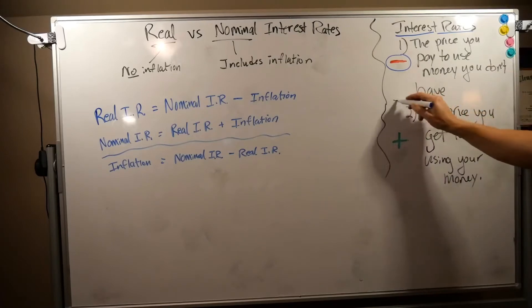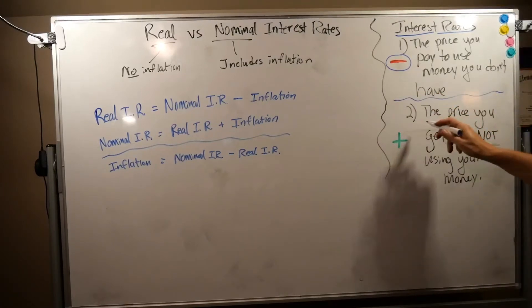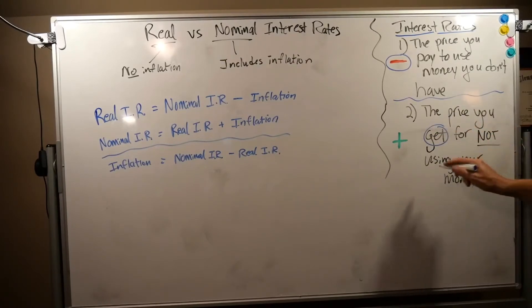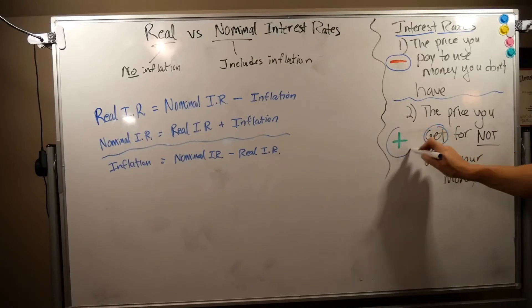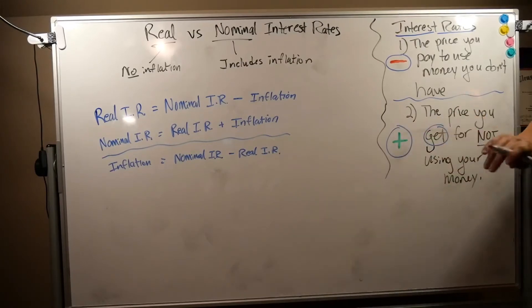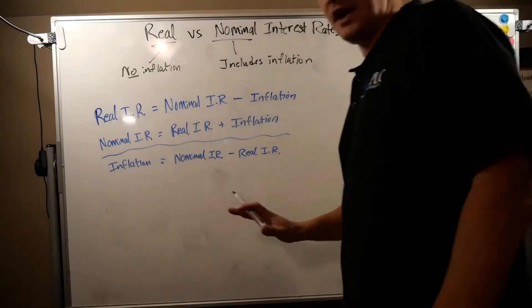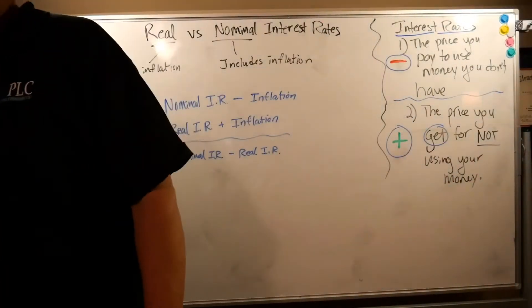Now, the second thing that interest rates are is the price you get, so you receive, for not using your own money. You can put it in the bank, you can put it in the market, you can earn some interest on it. That is a positive, so interest can actually work in your favor, especially compounding interest over time.